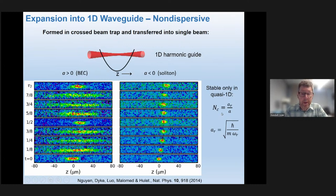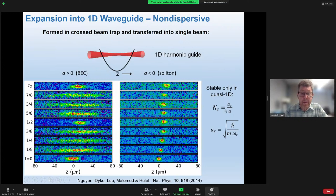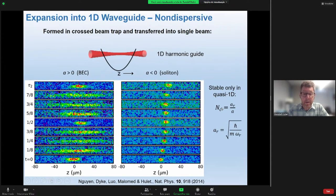The soliton is stable in quasi-1D as long as the total number of atoms N is less than NC — this ratio of the harmonic oscillator scale length along the radial direction compared to the magnitude of the S-wave scattering length. When N is less than NC, the soliton is stable against collapse. But when N exceeds NC, it will suddenly undergo a catastrophic collapse and the soliton will disappear.